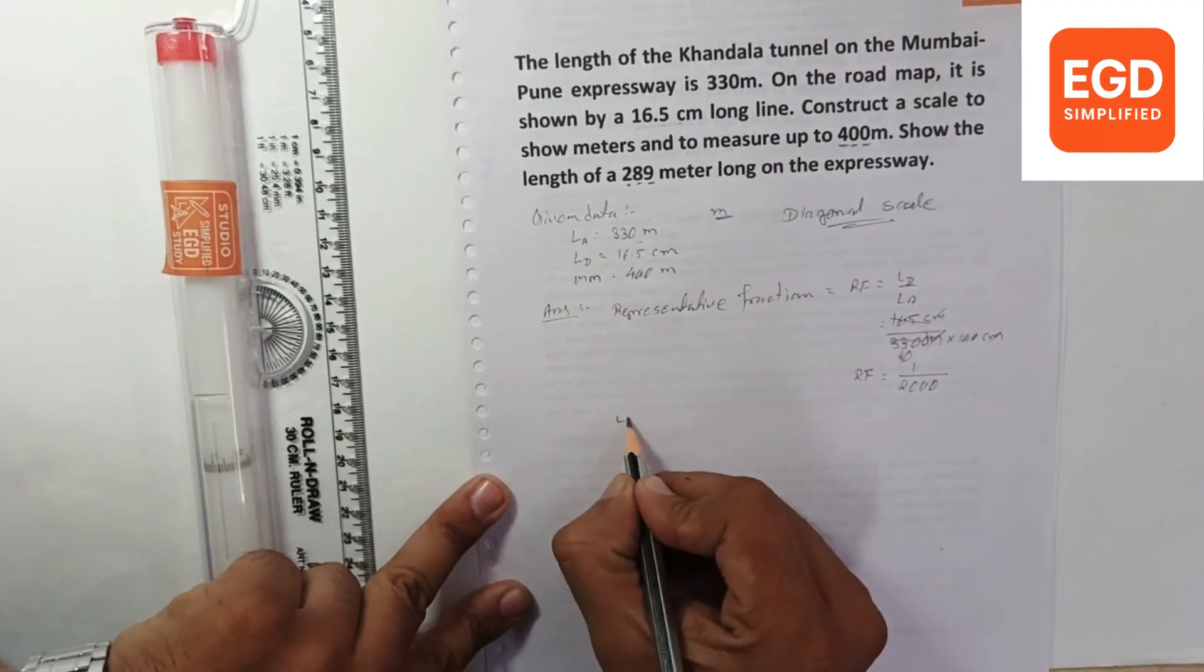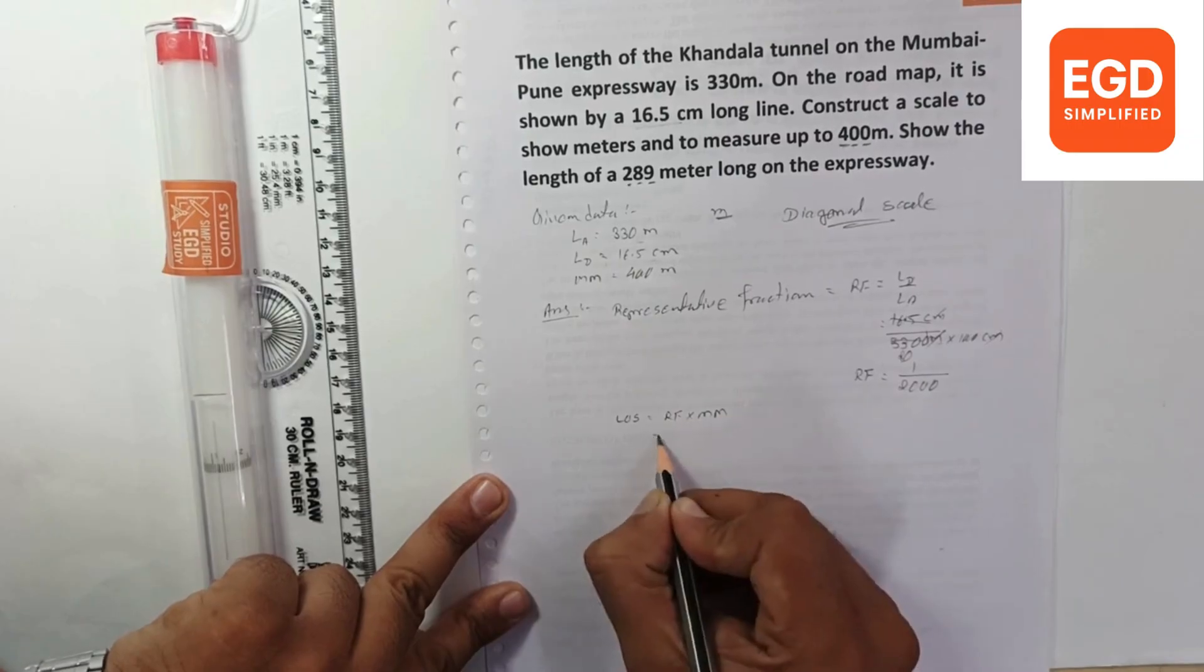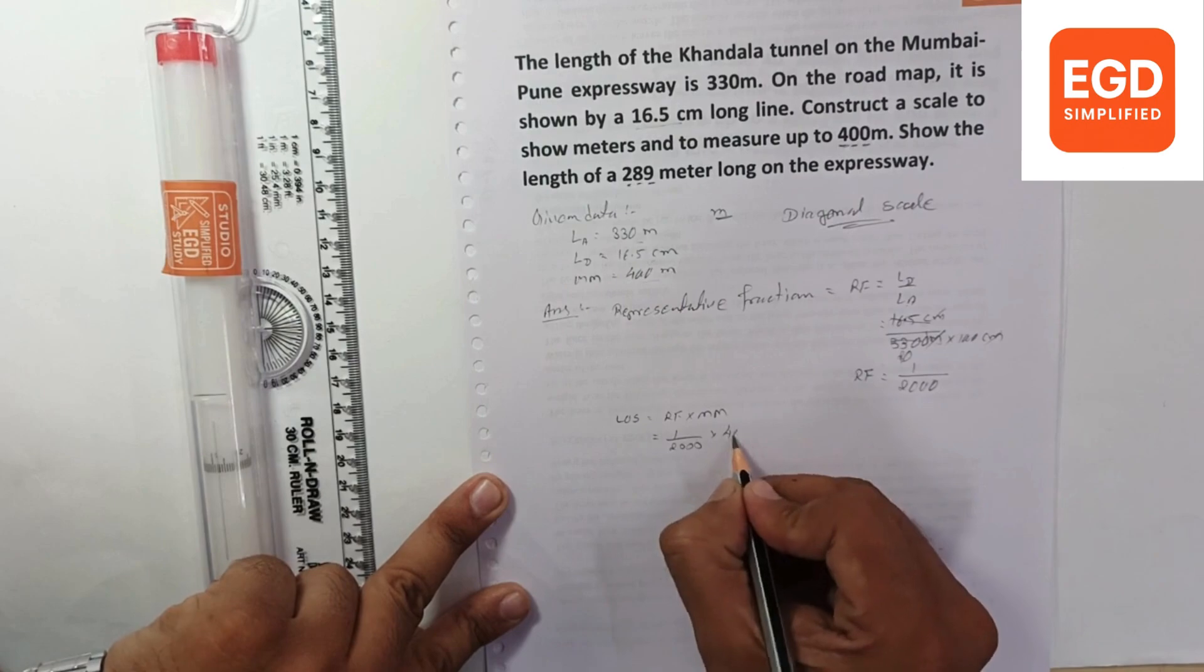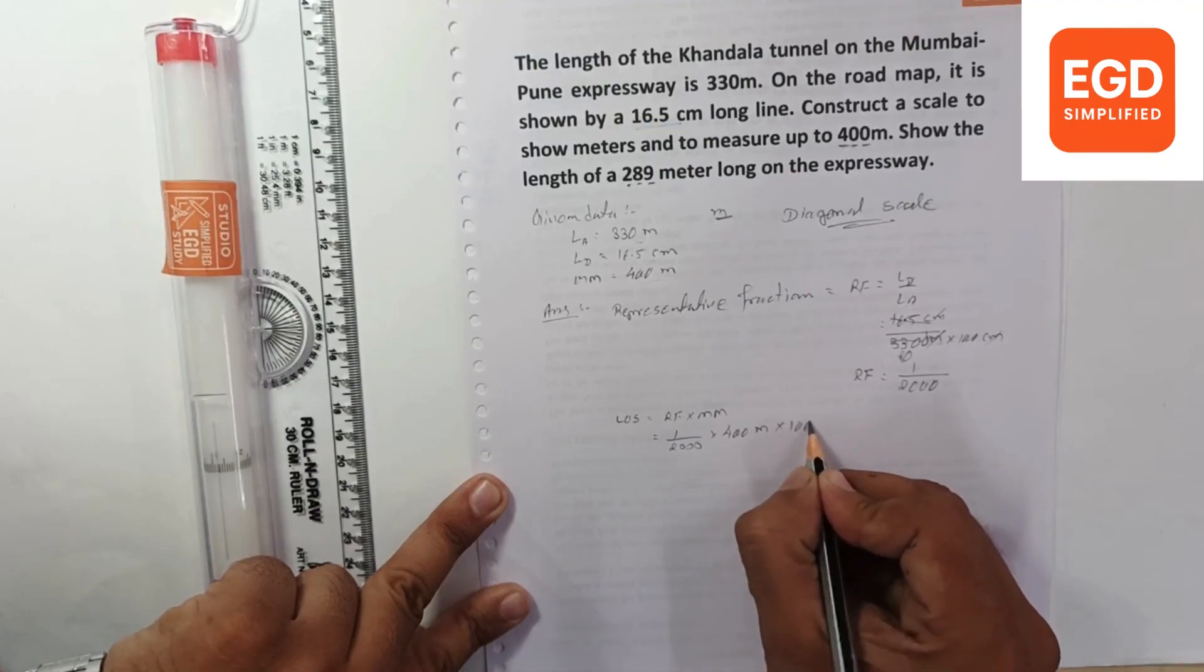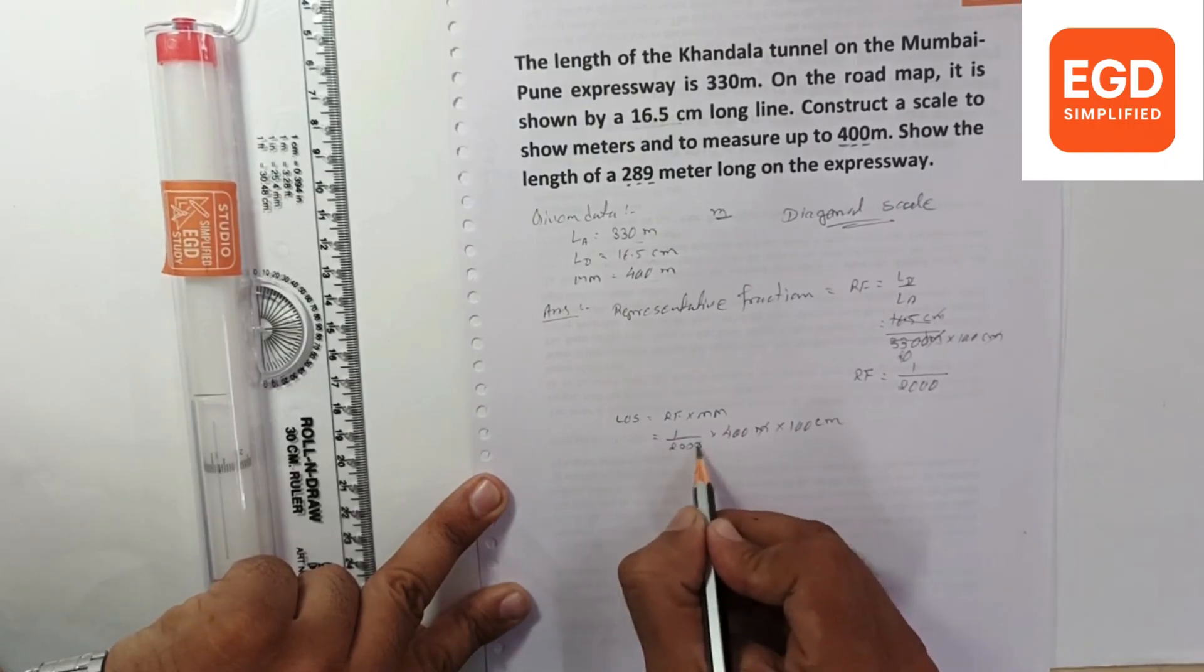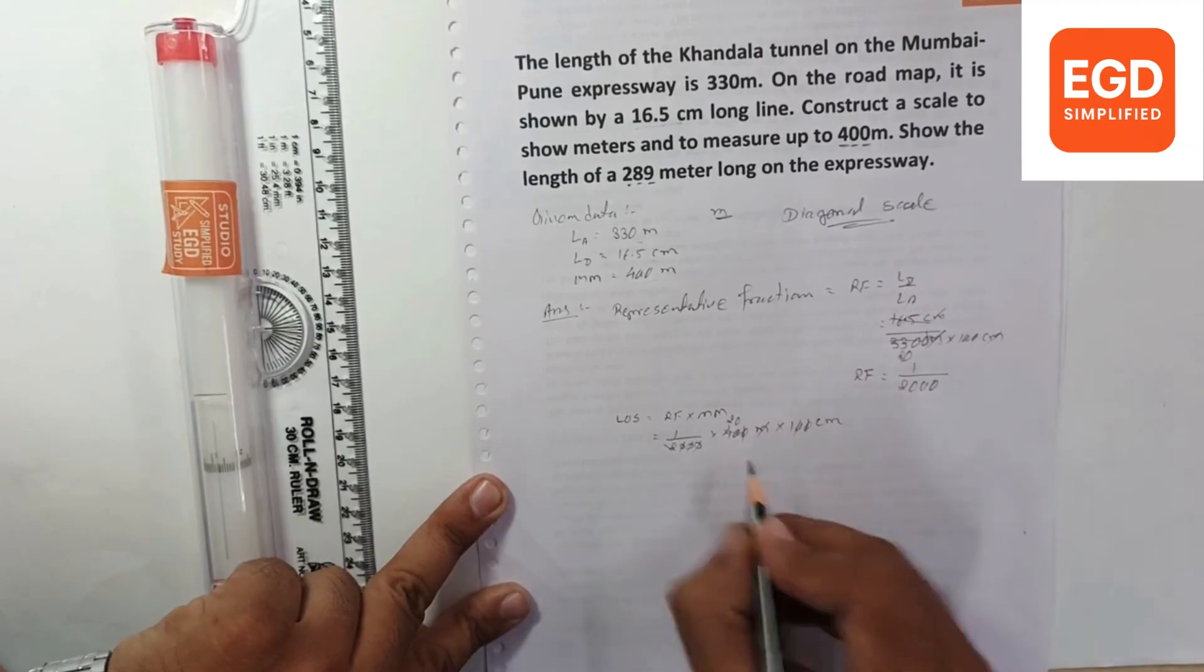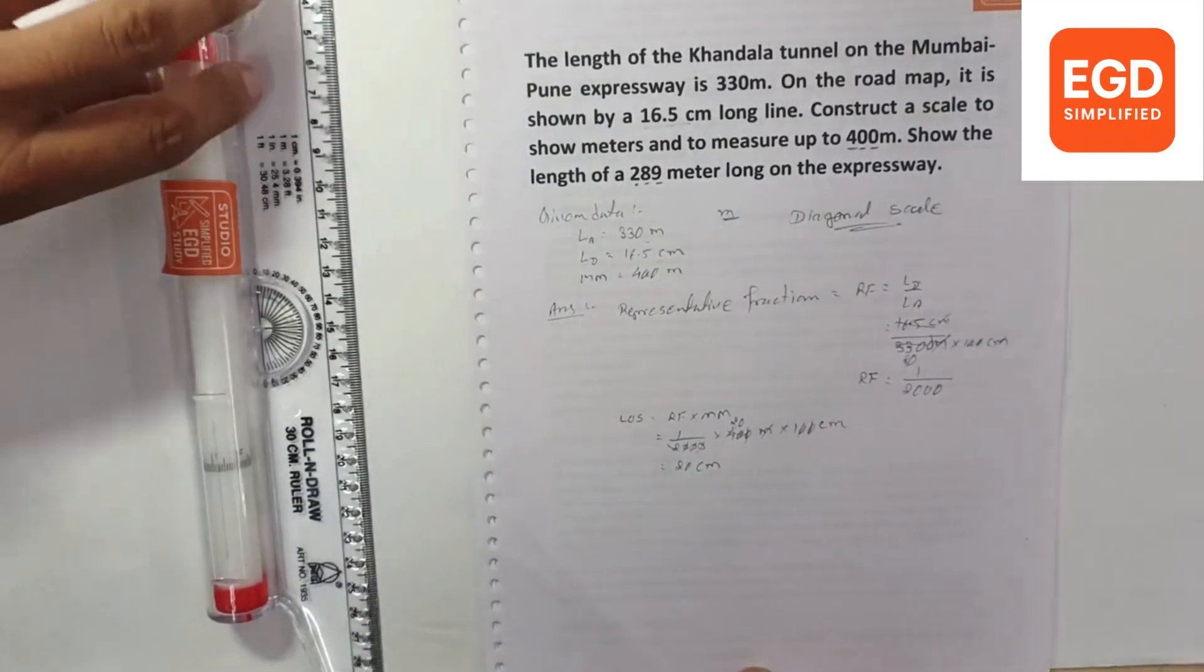Now we will calculate length of scale. Length of scale equals RF into maximum measurement. What is RF? 1 upon 2000 into maximum measurement, we have 400 meters. We are going to plot in centimeters. So multiply with 100. So we have to plot 20 centimeters long line.